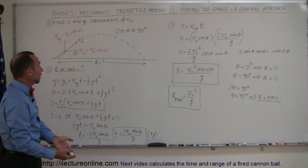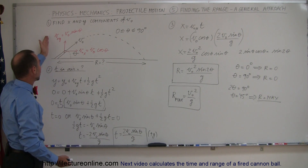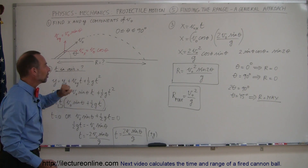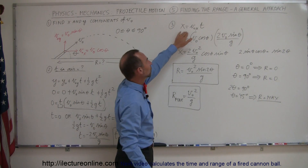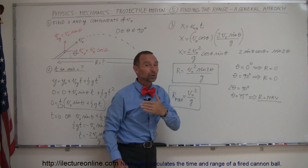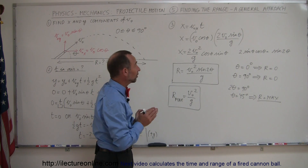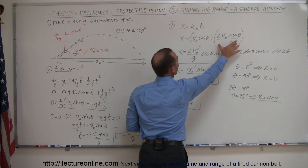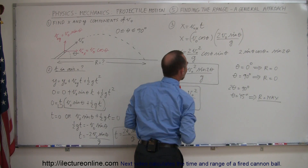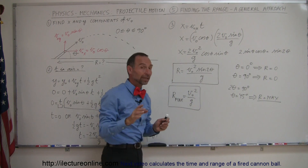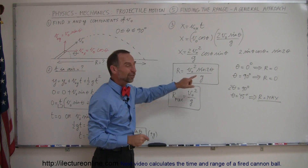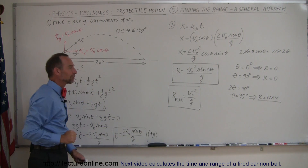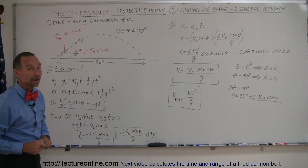The methodology is the same: find your components first, then find time in the air using the vertical equation, then plug into the horizontal equation because velocity is constant in the x direction. Plug in the initial velocity in the x direction and the time, and you get the range equation. Remember that in this case g is a positive 9.8 — we did that to eliminate the negative sign.